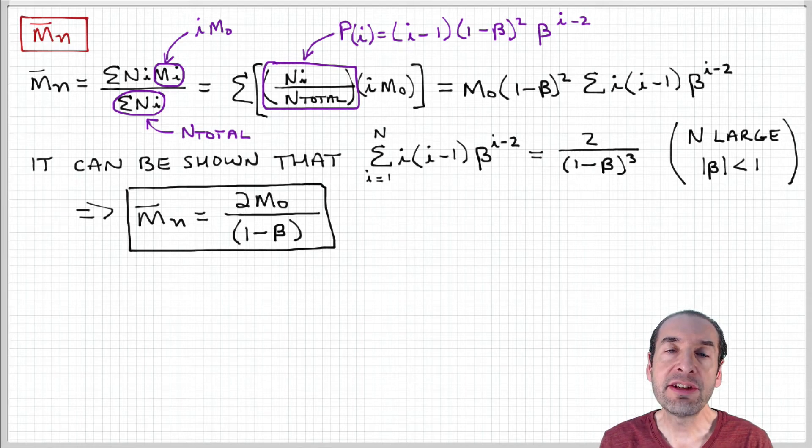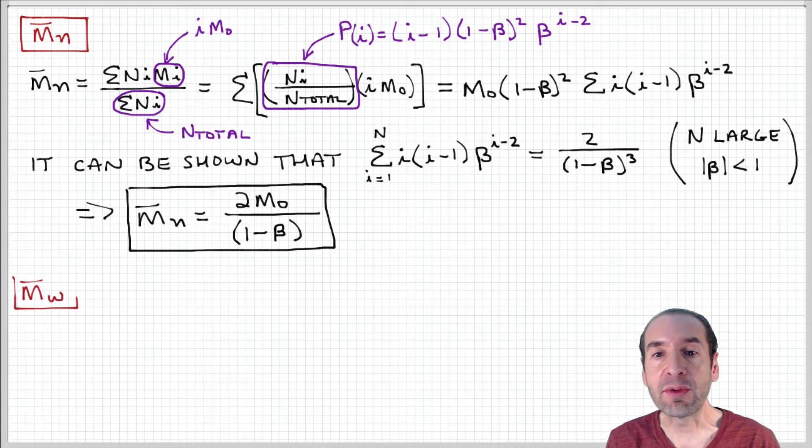We've seen how to calculate the number average molecular weight for combination termination and free radical polymerization. Now let's see how we can calculate the weight average molecular weight.